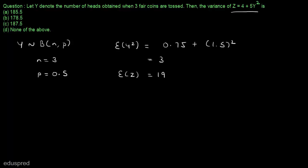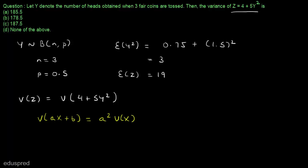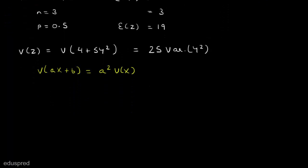Now let's proceed with this question. We have to calculate the variance of z, which means the variance of 4 plus 5y squared. We can use the property of variance: variance of ax plus b, where x is a random variable and a and b are constants, is equal to a squared times variance of x. Using this property, variance of 4 plus 5y squared is equal to 25 multiplied by variance of y squared.